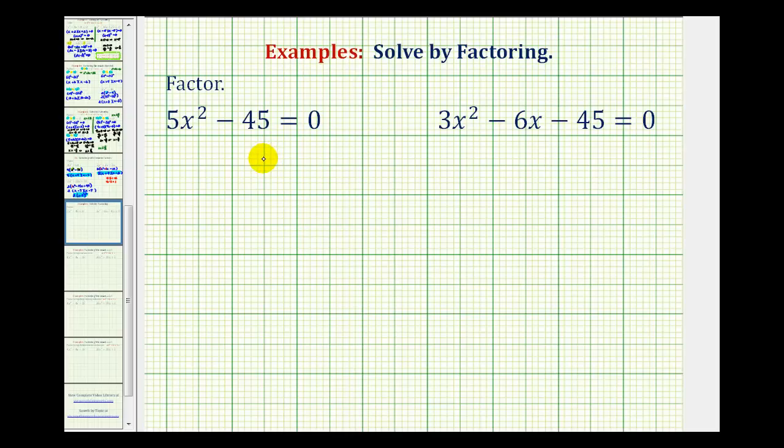We want to solve quadratic equations by factoring. Remember, the first step in any factoring problem is to factor out the greatest common factor. Looking at the first example, we have 5x² - 45 = 0.